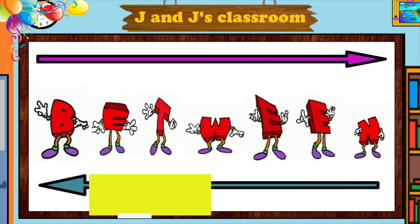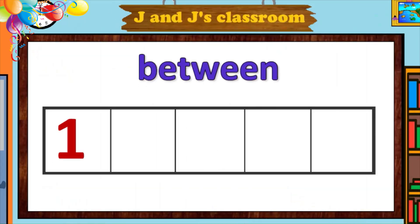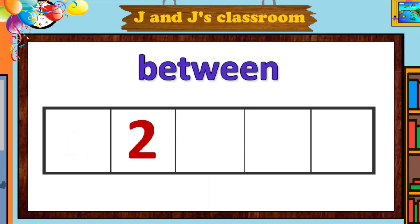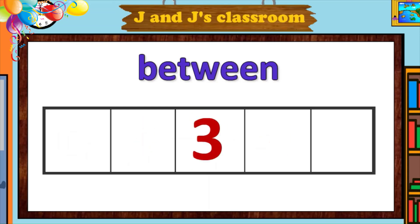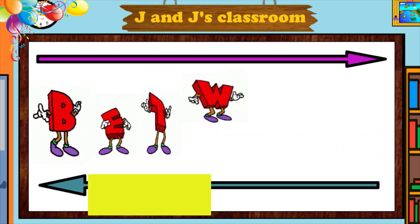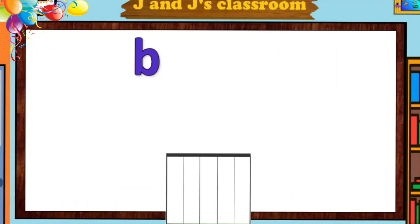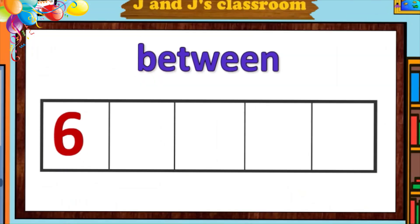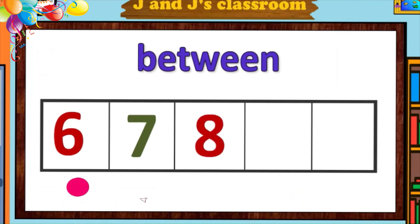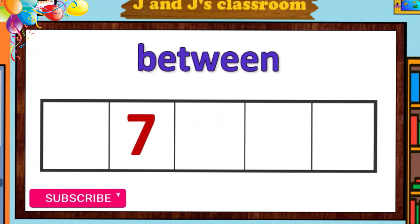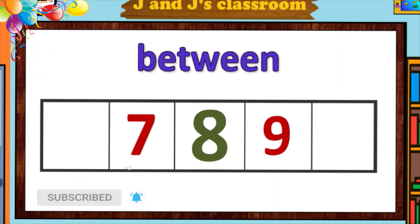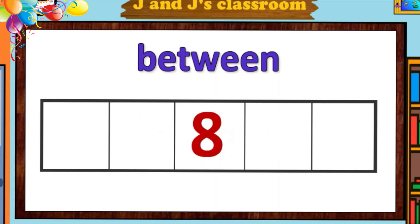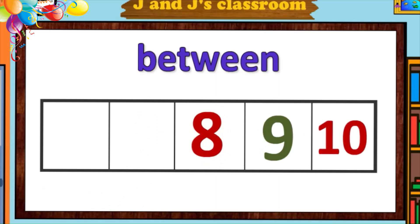Between. Two is between one and three. Three is between two and four. Four is between three and five. Seven is between six and eight. Eight is between seven and nine. Nine is between eight and ten.